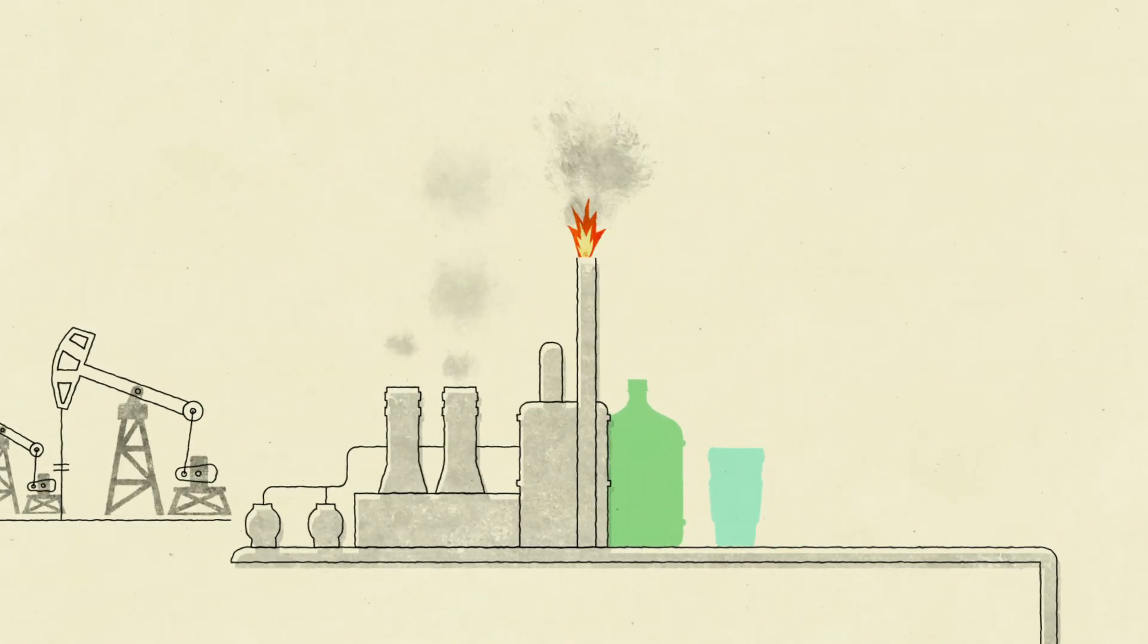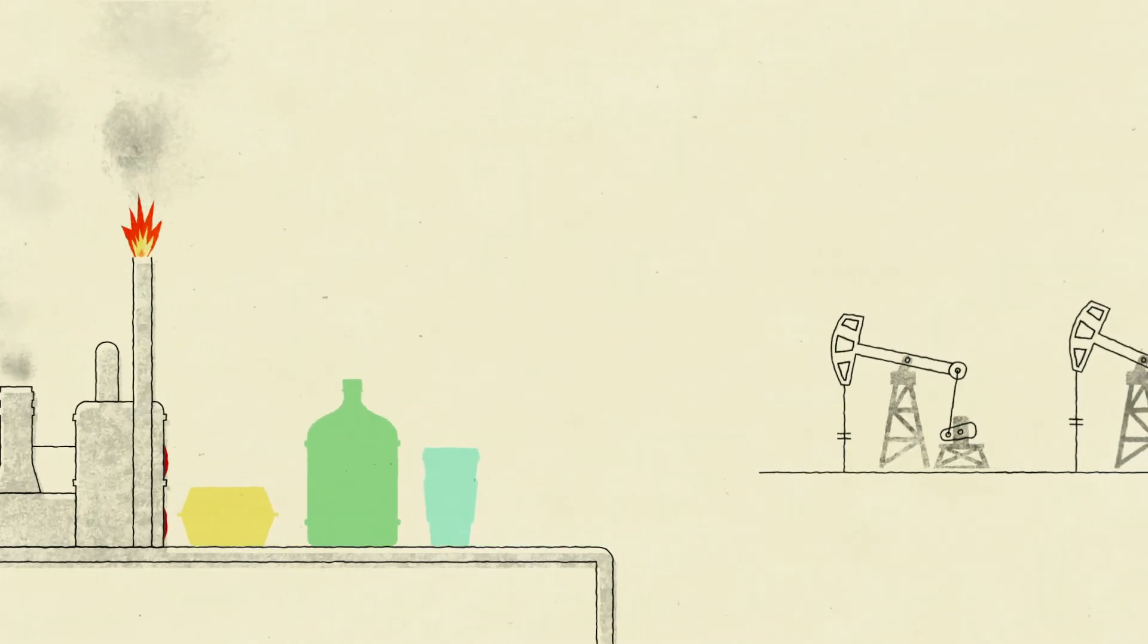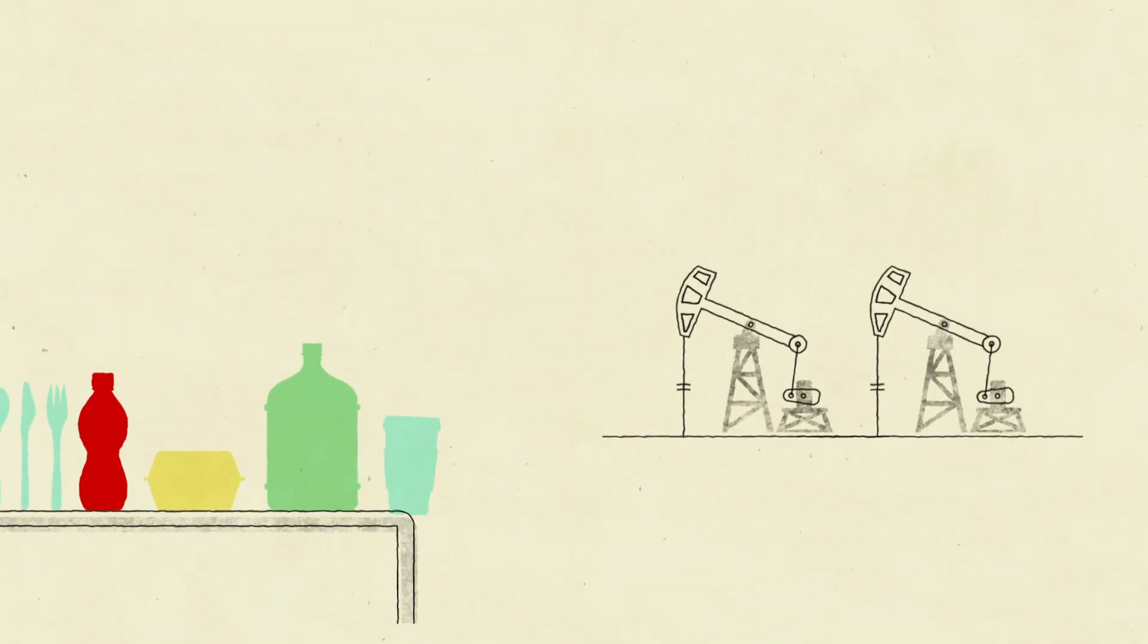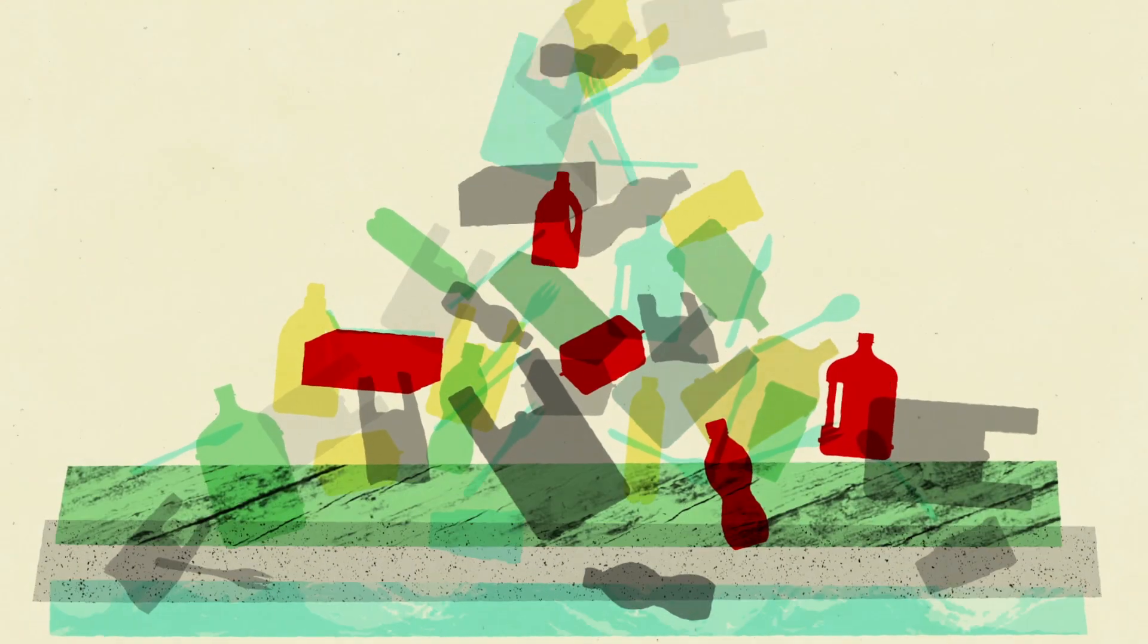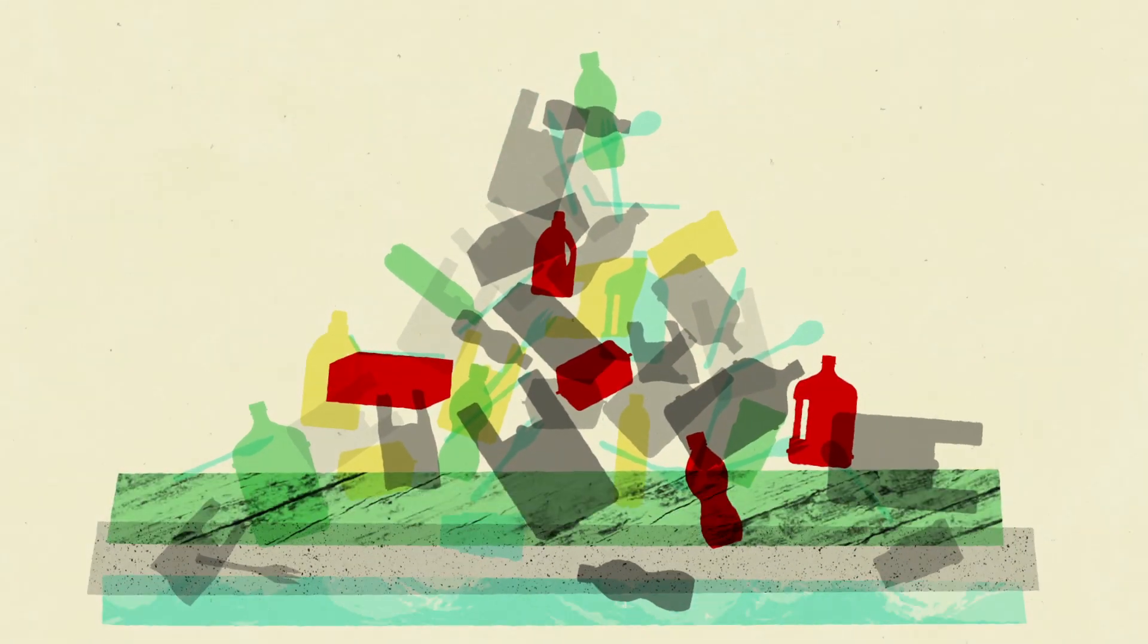4. The myth of chemical recycling props up the throwaway economy and diverts attention from the big changes needed for circularity. It means plastic producers can justify pumping out ever more plastic by claiming it can be chemically recycled.